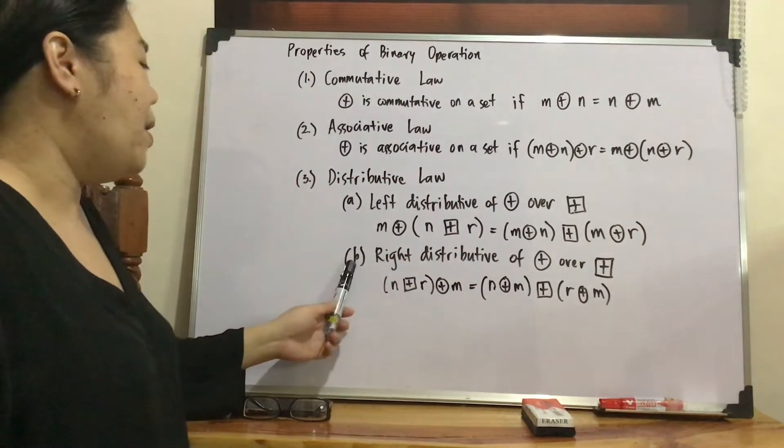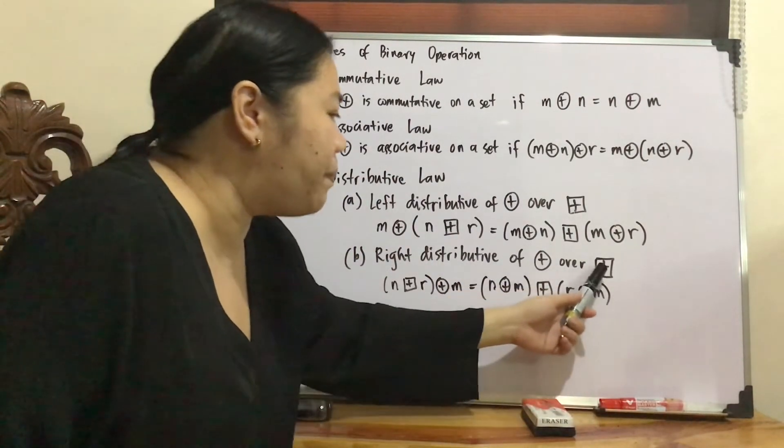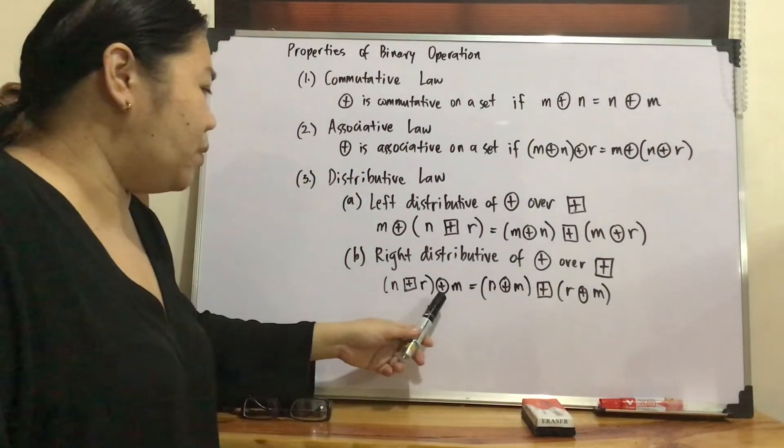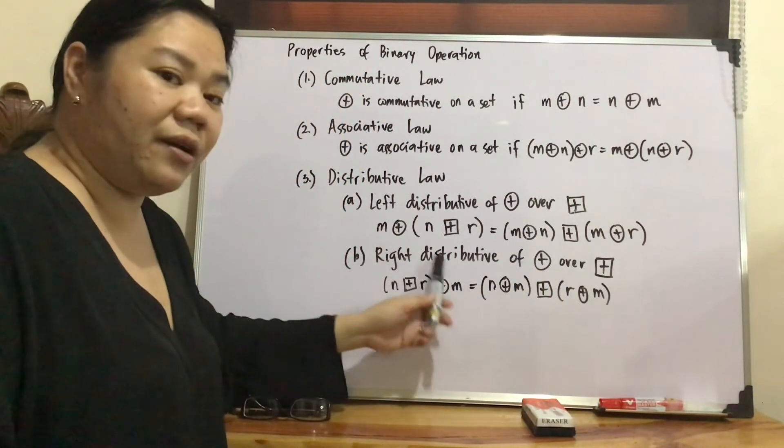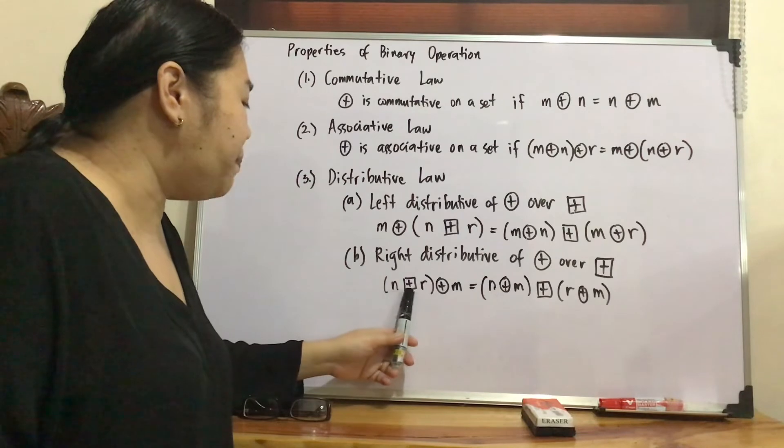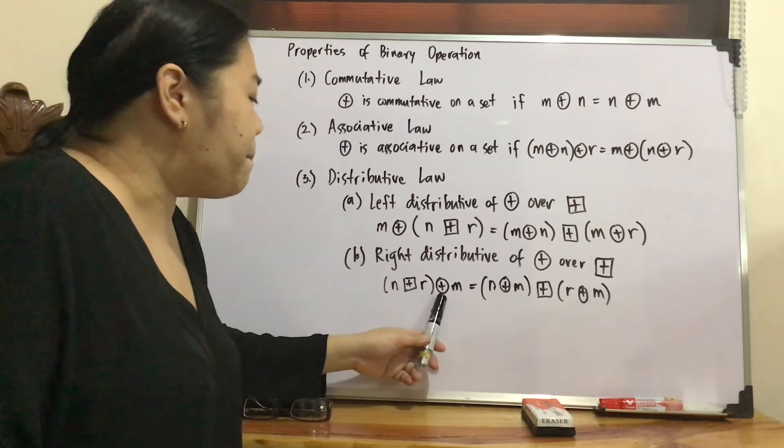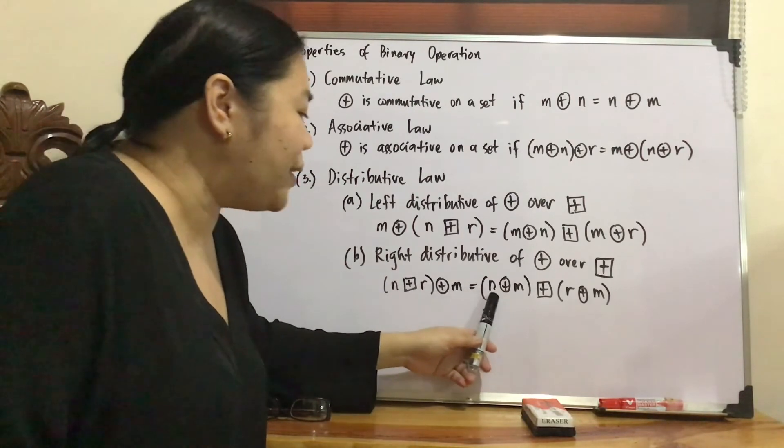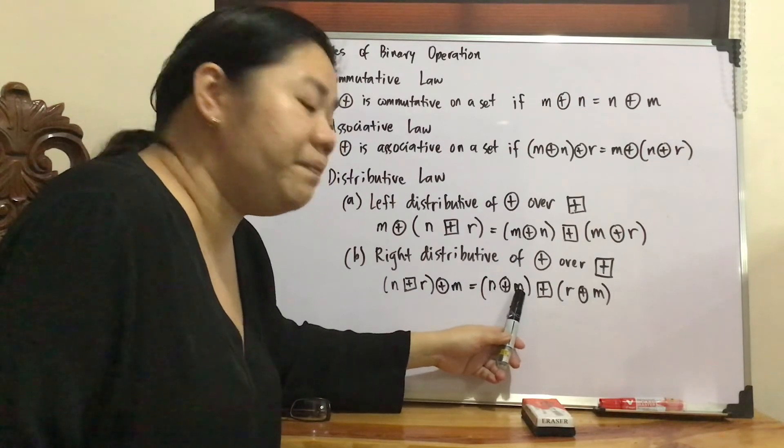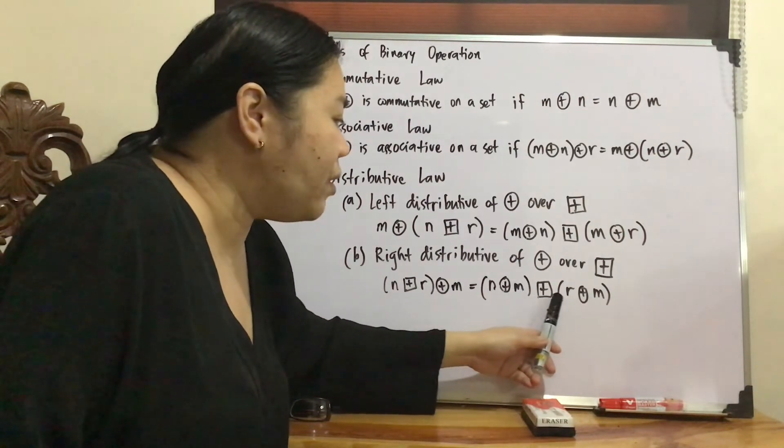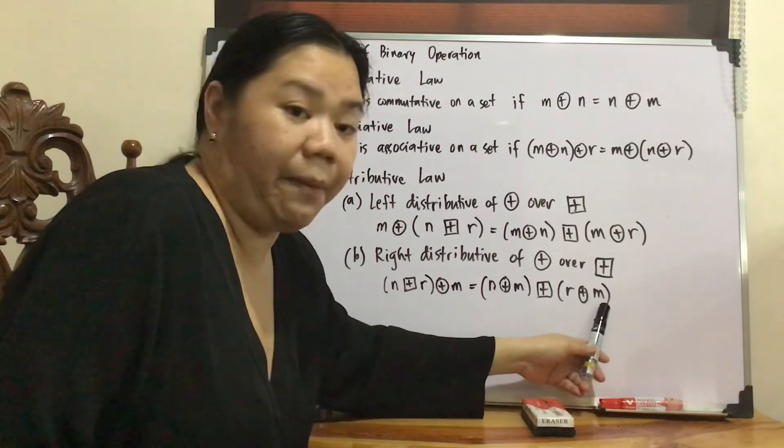So how about right distributive of plus circle over plus square. So right, it's coming from the right. So quantity N plus square R plus circle M is equal to quantity N plus circle M plus square quantity R plus circle M.